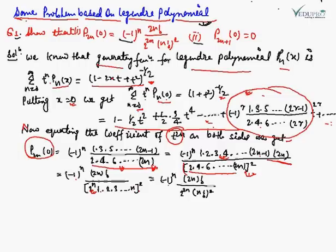So we now have P₂ₙ(0) = (−1)ⁿ · (2n)! / (2^(2n) · (n!)²), because the denominator has (2ⁿ)² = 2^(2n) and (n!)² from the whole square of n!. This completes the proof of the first part.